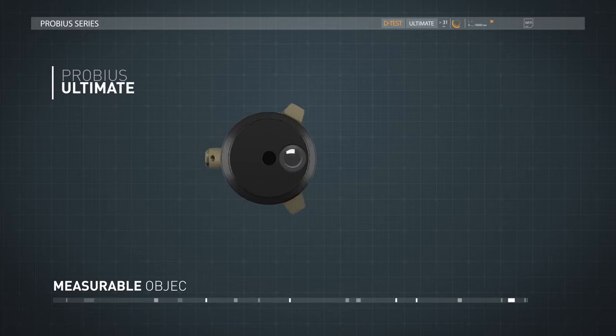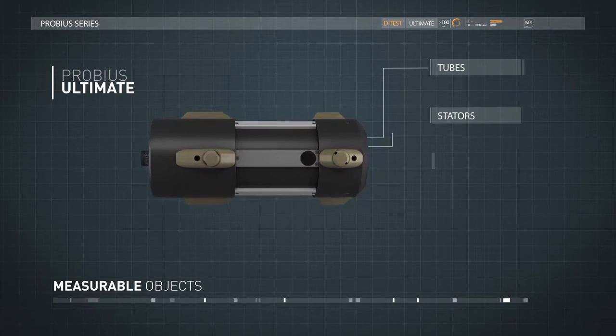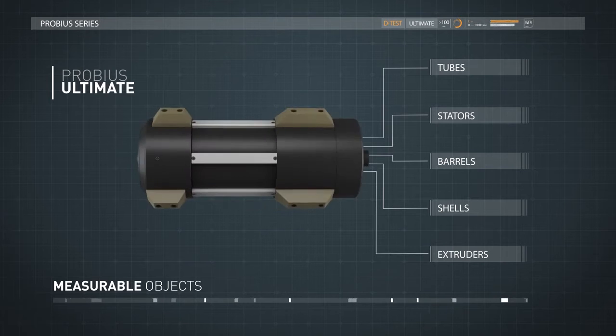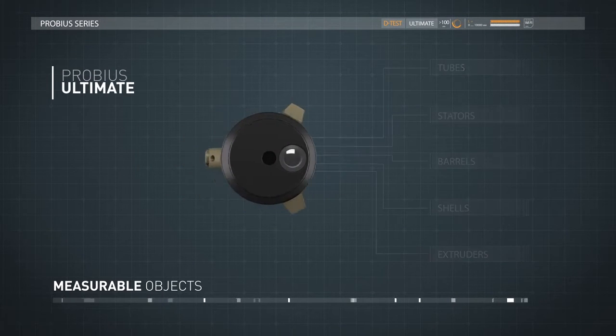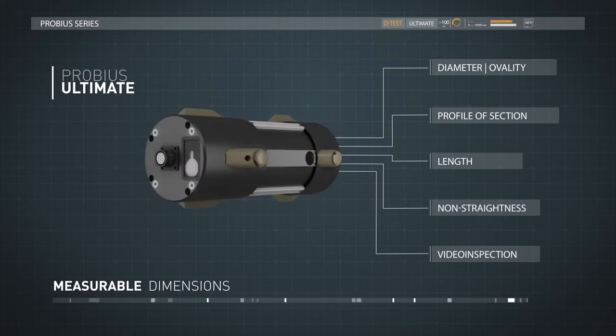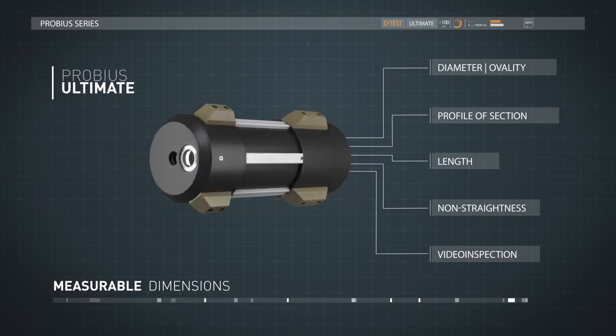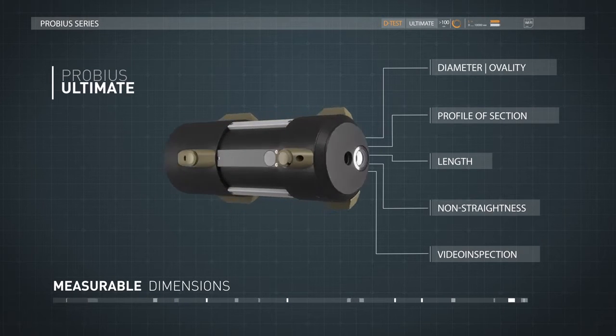ProBius allows for measurement of all types of cylindrical objects: tubes, stators, barrels, shells and extruders. You can measure diameter, ovality and non-straightness, scan cross-section profiles and perform video inspection all along the length of an object.